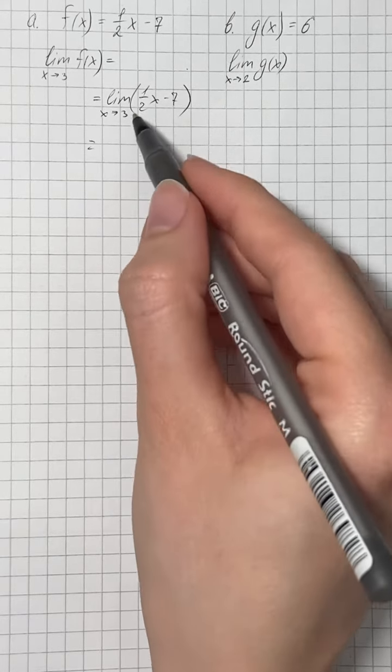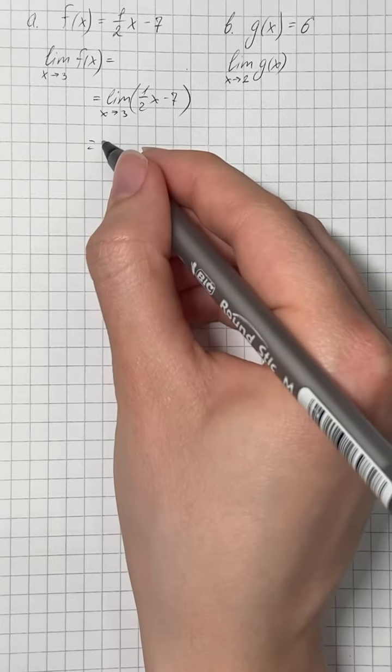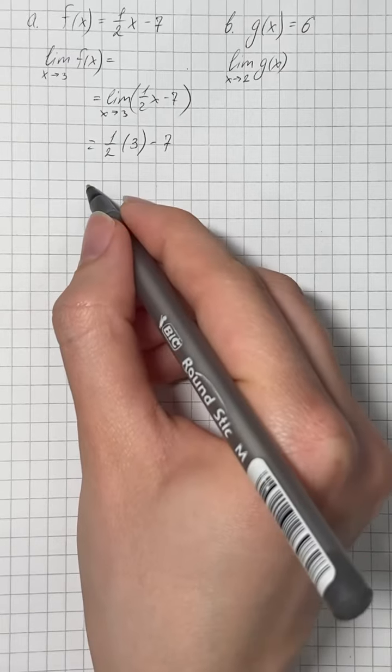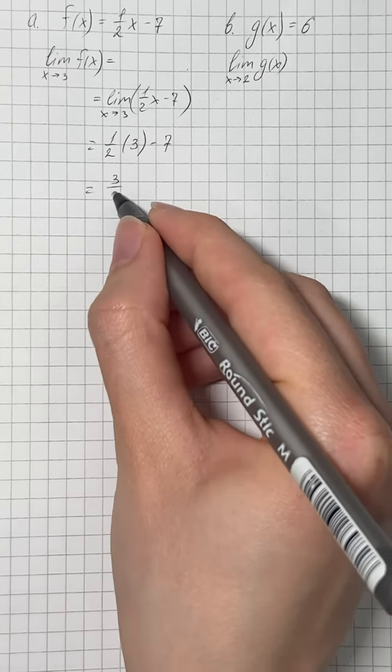Here we can just substitute x with 3 and we get one half times 3 minus 7. Therefore we get 3 over 2 minus 7.